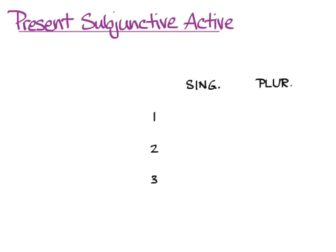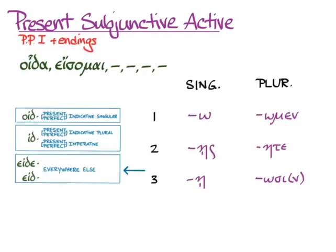When we get into the subjunctive, we're going to have our old familiar endings, and we're going to use the everywhere else stem, and what we'll get is eido, eides, eide, eidomen, eidete, eidosi, and the accent will be over the ending.